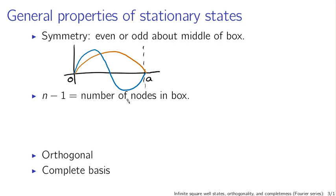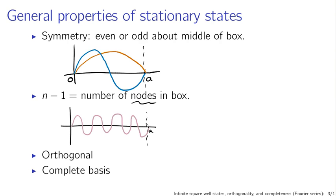The number of nodes is another property — this is the number of points where the wave function goes to zero. The blue curve for n equals 2 has one node. This trend continues: a wave function with seven nodes would be for n equals 8. These symmetry properties are nice and help you understand what the wave function looks like, but they don't really help you calculate. What helps you calculate are the orthogonality and completeness of these wave functions.